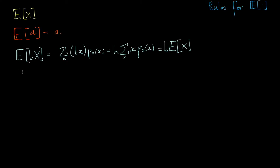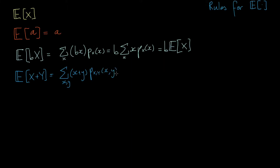Now to a less obvious identity. Suppose someone asks you for the expected value of the sum of two random variables — two separate random variables each with their own probability distribution functions. We can write this as a sum over all possible combinations of x and y, of (x + y) multiplied by the joint probability mass function, P_xy(x, y). This says: for every particular combination of x and y, we have the sum of x and y multiplied by the probability of getting that particular combination.